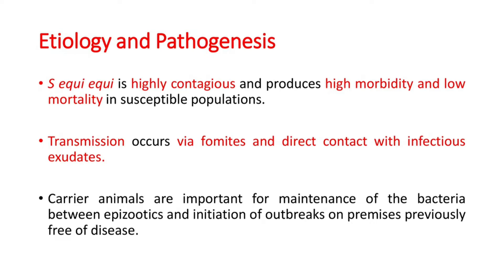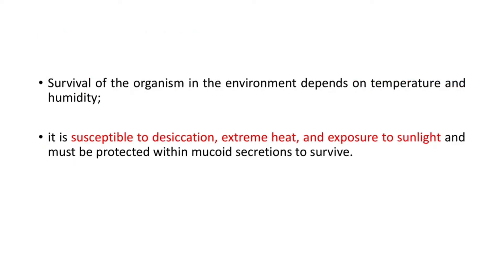Regarding etiology and pathogenesis: Streptococcus equi equi is highly contagious and produces high morbidity and low mortality in susceptible populations. Transmission occurs via fomites and direct contact with infectious exudates. Carrier animals are important for maintenance of the bacteria between episodes and initiation of outbreaks on premises previously free of disease. Survival of the organism in the environment depends on temperature and humidity, as this bacteria is susceptible to desiccation, extreme heat, and exposure to sunlight, and must be protected within mucosal secretions to survive.